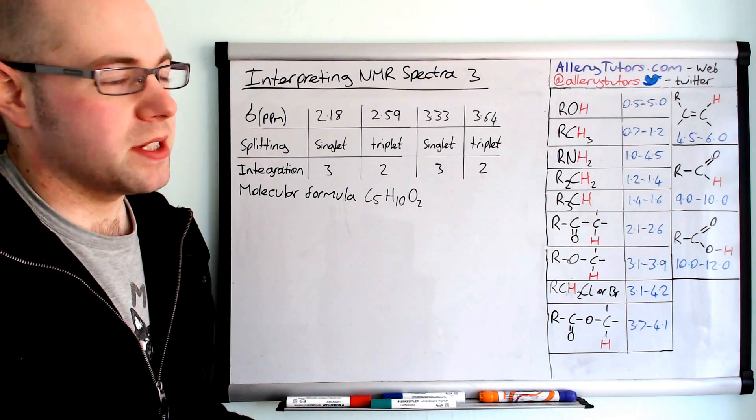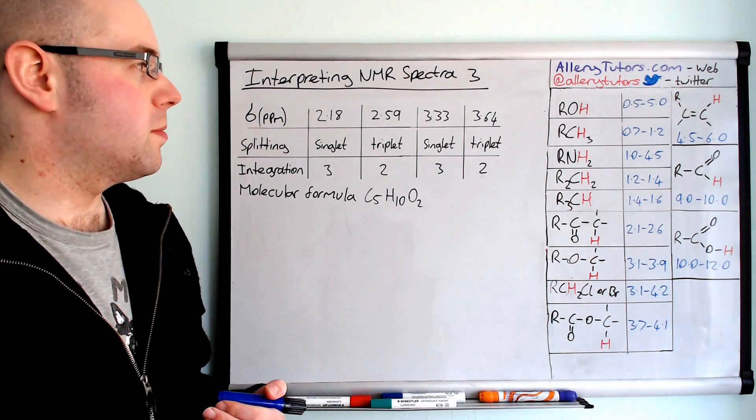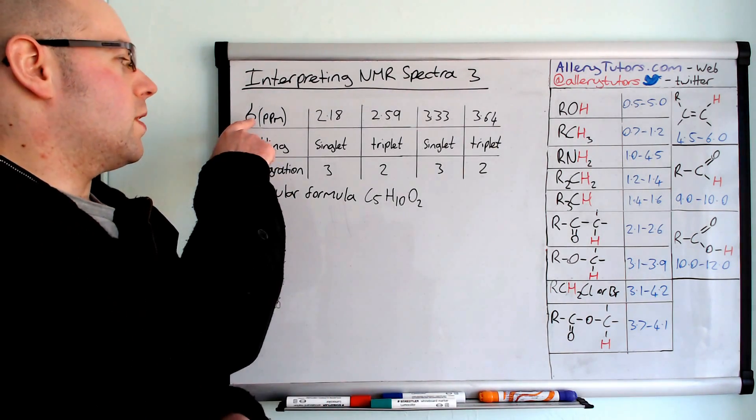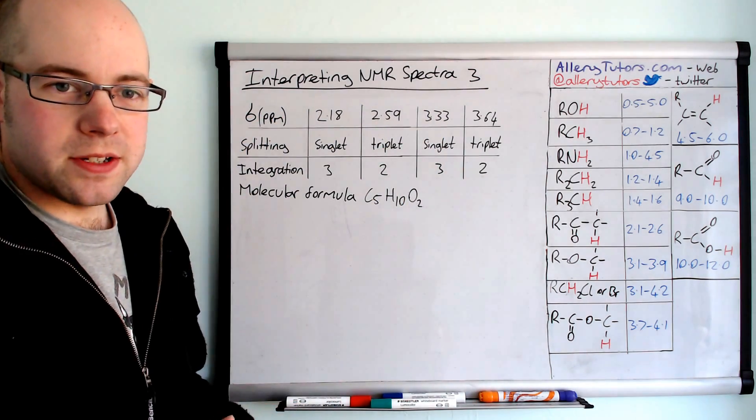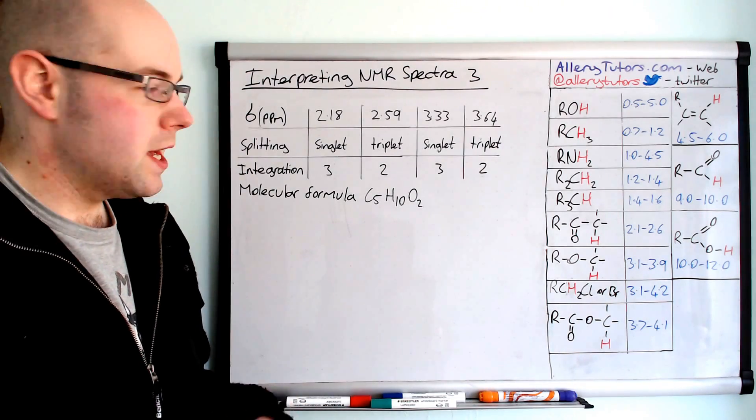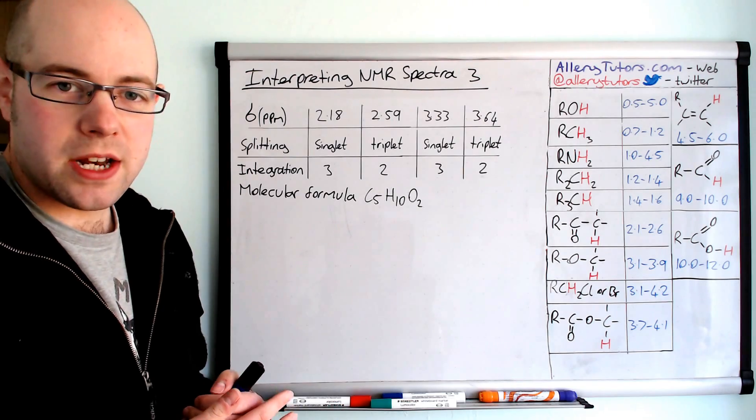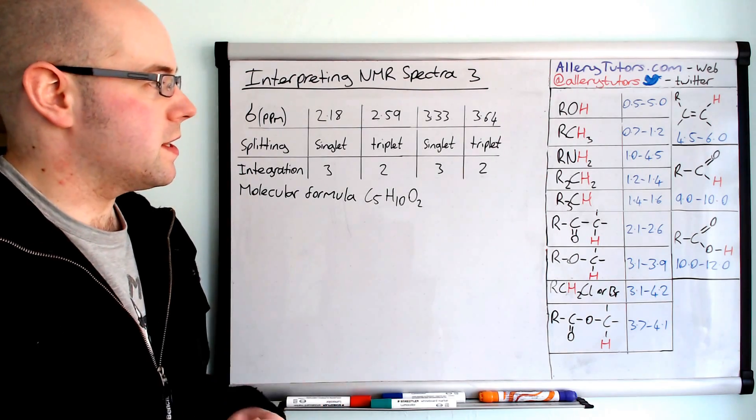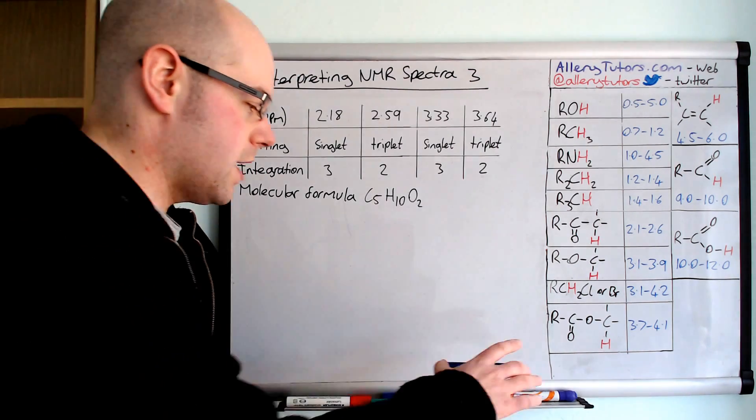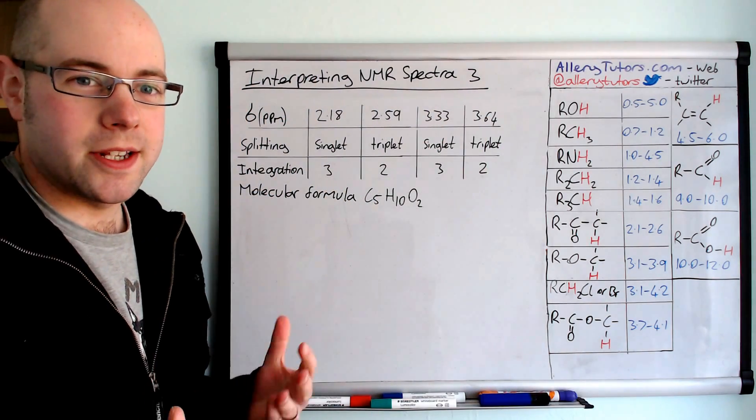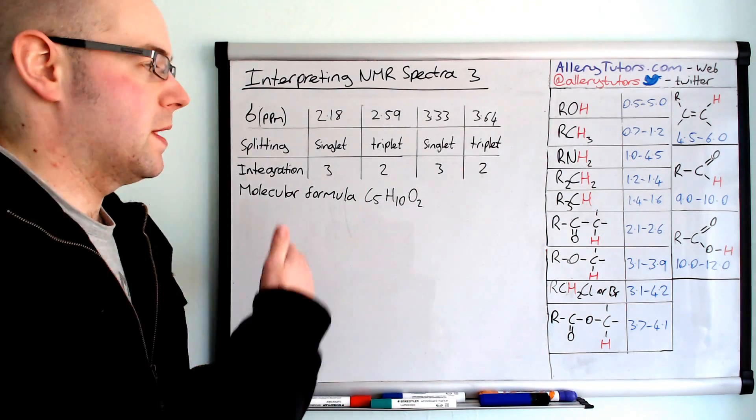We're going to start with this example. Like I say, it's a bit different because we've got the NMR data in a table form instead. We've got our chemical shift values at the top, our splitting values, and integration values for each of these. We've been told that the molecular formula we have to work with is C5H10O2. It's arranged in a different way, so I'm just going to make it clearer and give each row a letter. That's the number of hydrogen environments we have, and this is proton NMR.